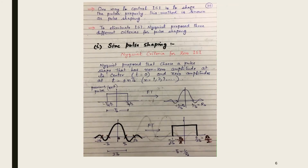One way to control ISI is to shape the pulses properly. This method is known as pulse shaping. To eliminate ISI, Nyquist proposed three different criteria for pulse shaping.